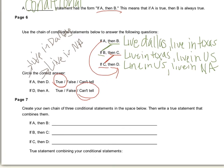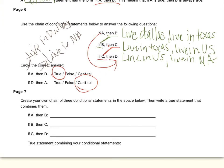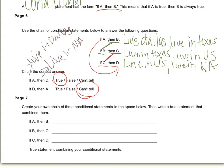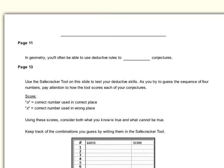They ask you to create your own chain of conditional statements — you can just use the example I've given here. The true statement combining them would be: if you live in Dallas, then you live in North America. Moving along, it says that in geometry you'll often be able to use deductive rules to prove conjectures. We're going to go ahead and do a couple of examples in the checkup, because that's what will be similar to your homework or quiz.